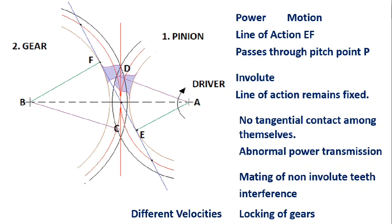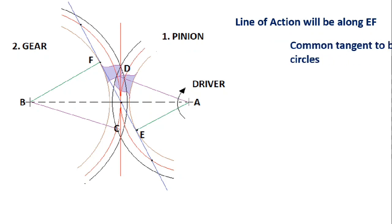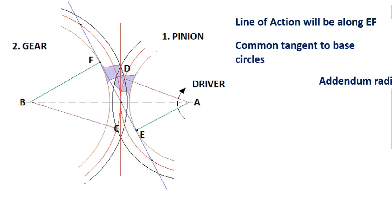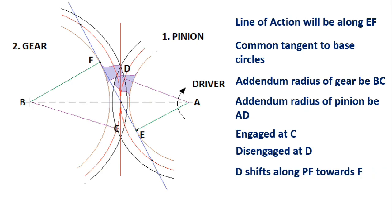Now let us see what is the maximum permissible addendum circle radius to avoid this interference. This figure shows when two gears — the pinion and gear — are meshed together. The pinion is the driver, and the line of action is along EF, the common tangent to the base circles of the two gears. Let the addendum radius of the gear be BC and that of the pinion be AD. The teeth on the pinion and gear are engaged at point C and disengaged at point D, both on the addendum circle.